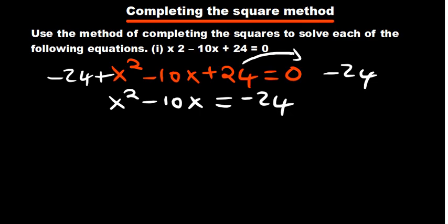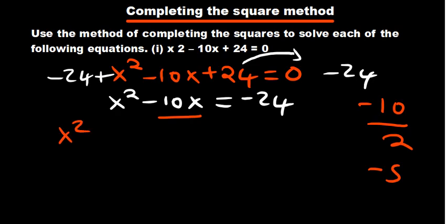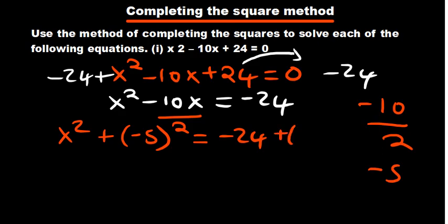The next step is to work with the b part, the middle term. We need to find half of the coefficient: half of negative 10 is negative 5. We then add the half squared — that is, negative 5 squared — to both the left-hand side and the right-hand side.